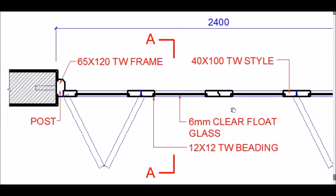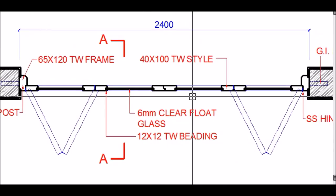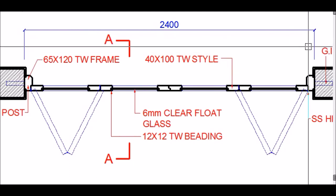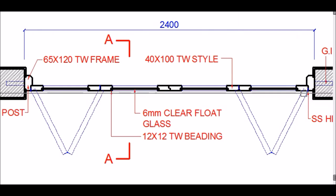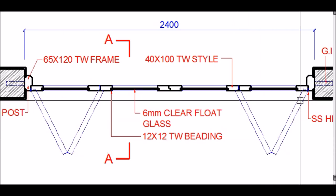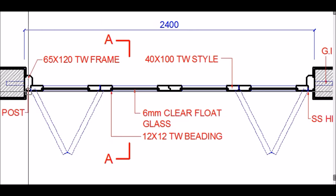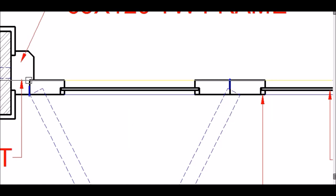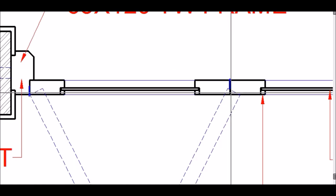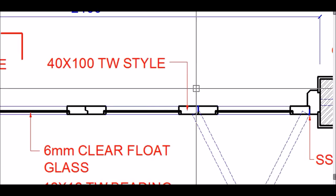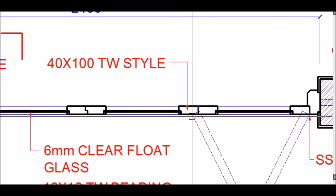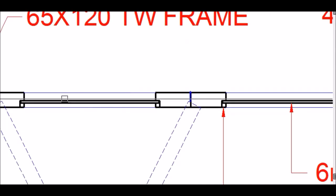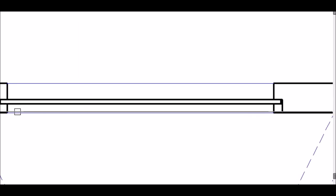Now let's look at the parts of the shutter. The total width of 2.4 meters is divided into four equal shutters — two opening in one direction and two opening in the other direction, as shown by the dotted lines indicating the shutters in the open position. Each shutter is made of two vertical members called styles, specifically 40 by 100mm teakwood styles, with glass in between.